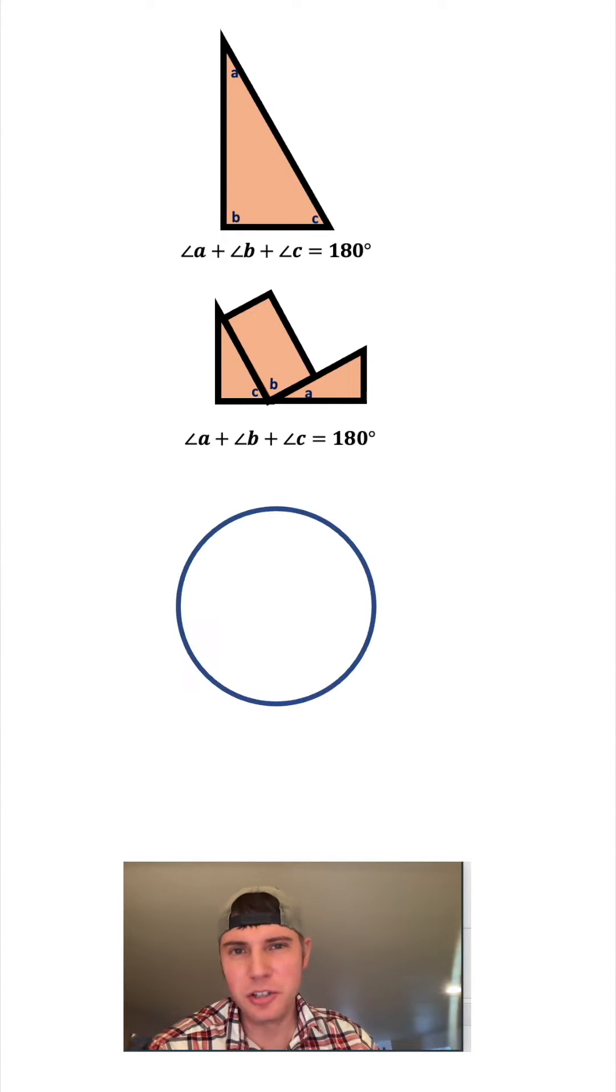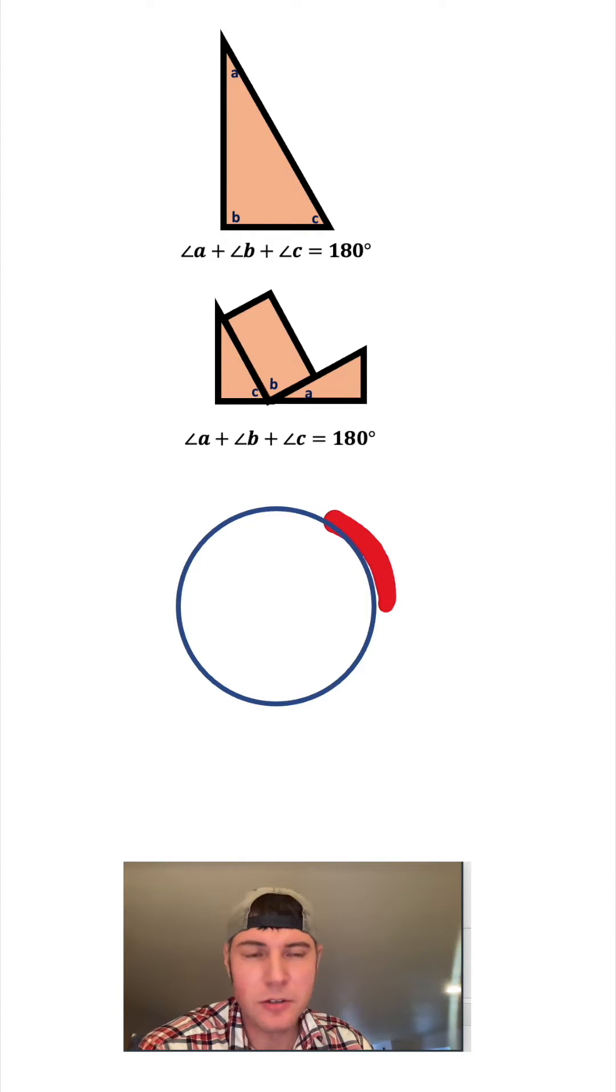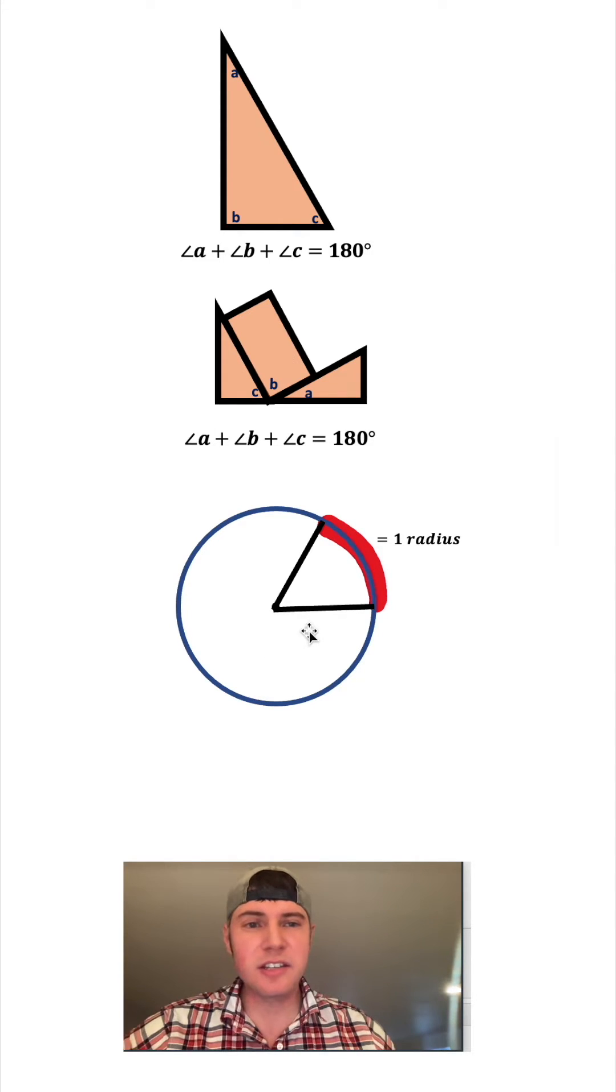Where does the pi come from? Pi is usually tied back to a circle. If we take the radius of the circle and we spin it around, this is one radius wrapped around the circle. If we find the center of the circle and subtend the ends of that radius, this is a way to measure the angle and we would say it's one radian.